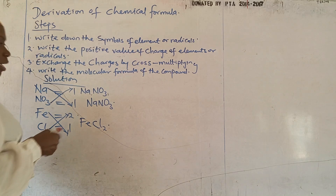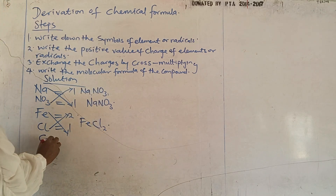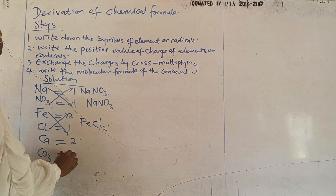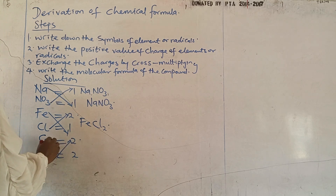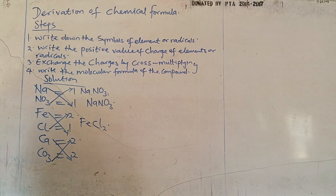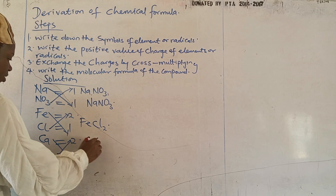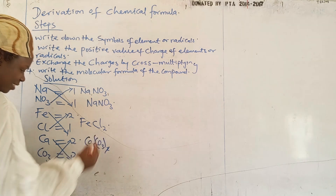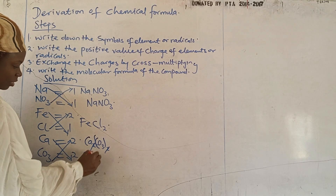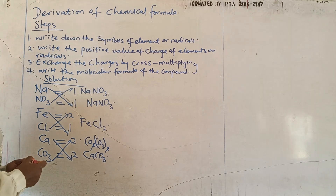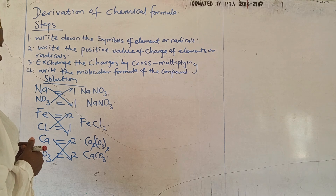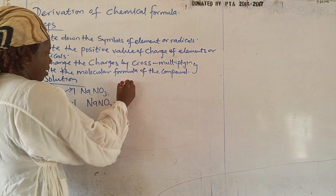The next example uses another radical — calcium and CO₃. Calcium has a charge of 2 and CO₃ also has 2. We write the positive values, then cross-multiply to get Ca₂(CO₃)₂. But of course these twos cancel out, so at the end we have CaCO₃ — that is calcium carbonate.